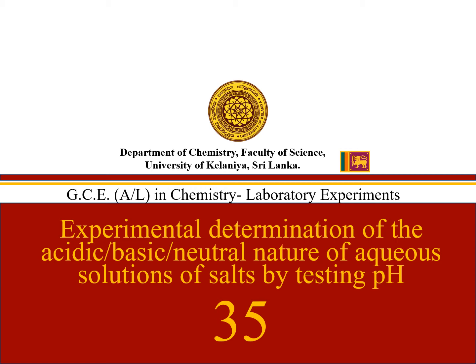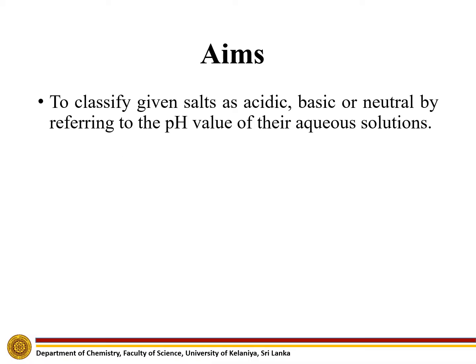Experiment number 35: Experimental determination of the acidic, basic, and neutral nature of aqueous solutions of salts by testing pH. The aim of this experiment is to classify given salts as acidic, basic, or neutral by referring to the pH value of their aqueous solutions.